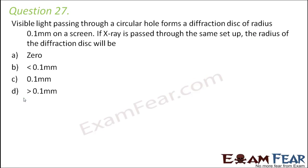Question number 27: Visible light passing through a circular hole forms a diffraction disk of radius 0.1 mm on a screen. If X-ray is passed through the same setup, what is the radius of the diffraction disk? The only difference is we changed visible light to X-ray, and X-rays have a shorter wavelength than visible light.